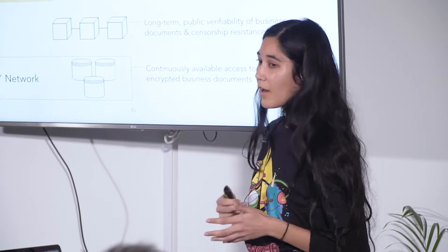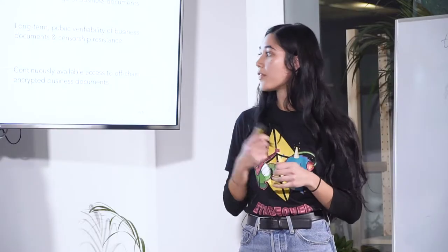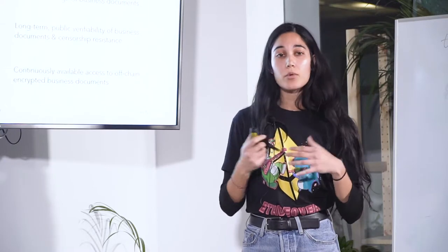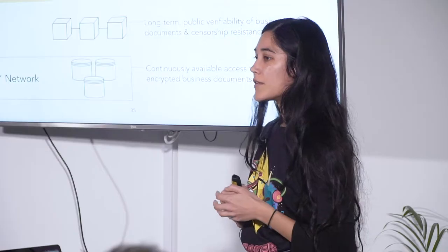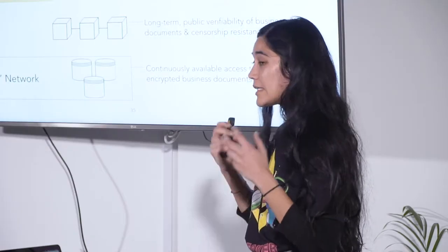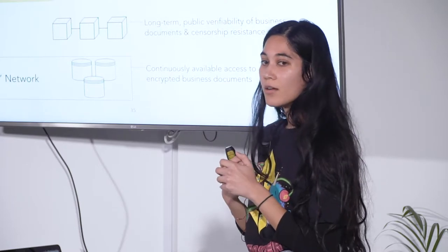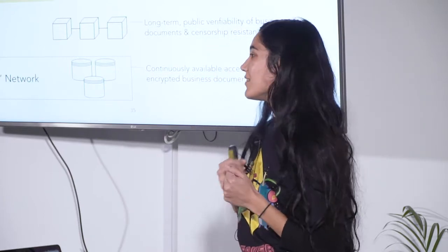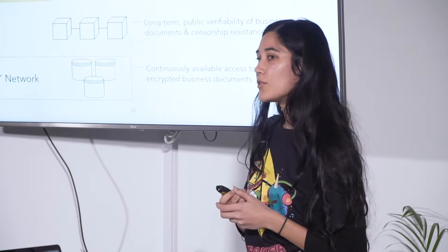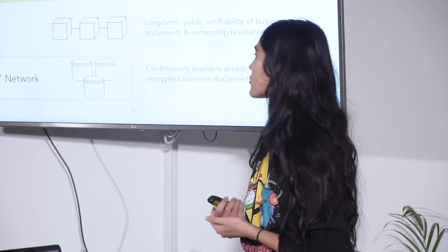We wanted this to be a trustless network, so business documents would be encrypted and we would use the token to incentivize this network of keepers. But this was part of our iteration — we felt this adds a large degree of complexity. Although we really want data availability long term, this isn't a core issue we need to solve right now. It's not the core purpose of Centrifuge and something that would be great, but we don't need it at the beginning of the network to make it genuinely useful from the start.